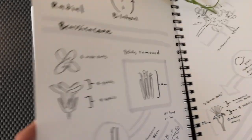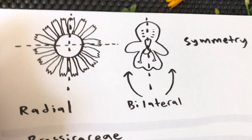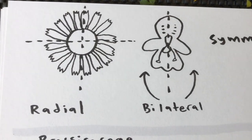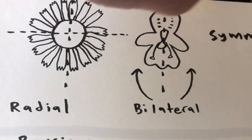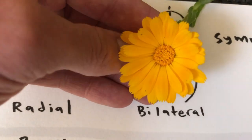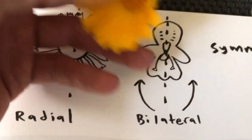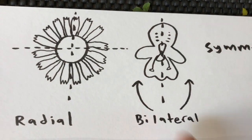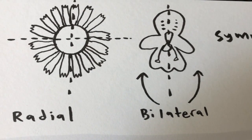One other thing to understand is the difference between radial and bilateral symmetry. Some flowers you can look at from above and no matter how you draw a line through them, they will be the same on both sides. Other flowers can only be divided one way and still have that type of symmetry.